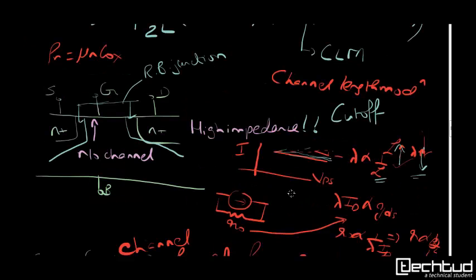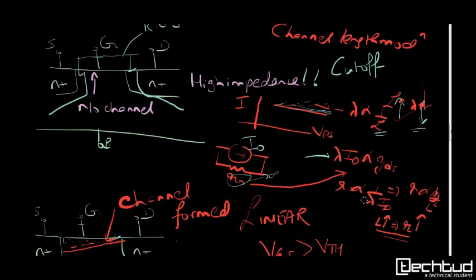One more thing: lambda times ID is proportional to GDS. For a constant current source, you want that the resistance should tend to infinity. We are coining this term R0, which is proportional to 1 by lambda ID. So remember these things.